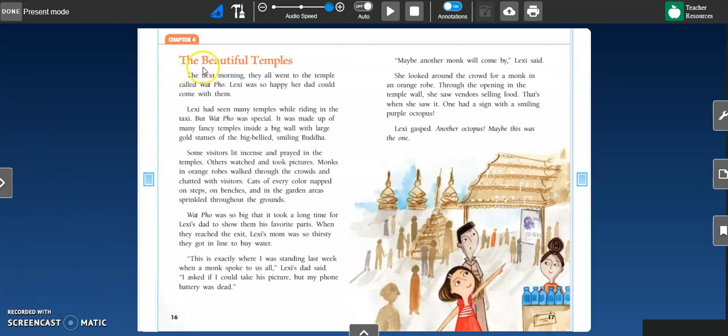The Beautiful Temples. The next morning, they all went to the temple called Wat Pho. Lexi was so happy her dad could come with them. Lexi had seen many temples while riding in the taxi. But Wat Pho was special. It was made up of many fancy temples inside a big wall with large gold statues of the big-bellied, smiling Buddha. Some visitors lit incense and prayed in the temples. Others watched and took pictures. Monks in orange robes walked through the crowds and chatted with visitors. Cats of every color napped on steps, on benches, and in the garden areas sprinkled throughout the grounds.